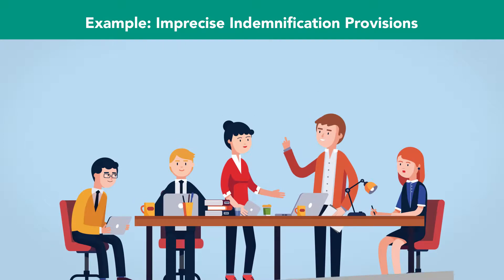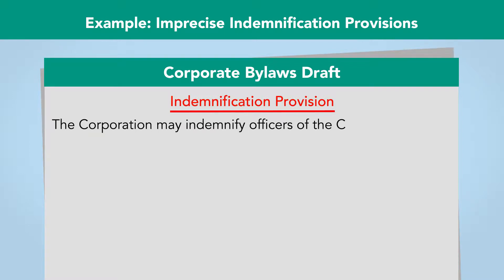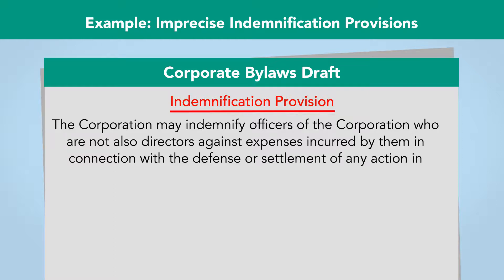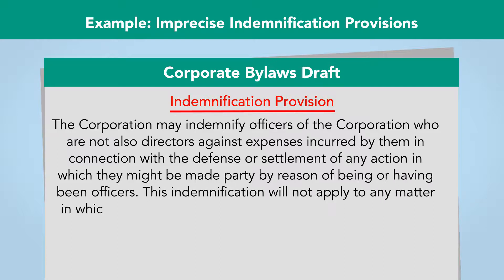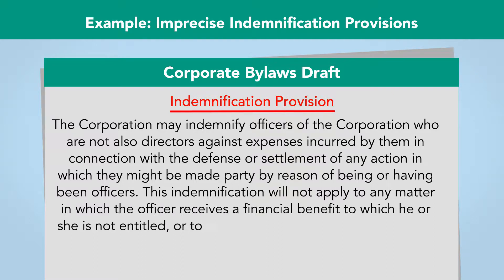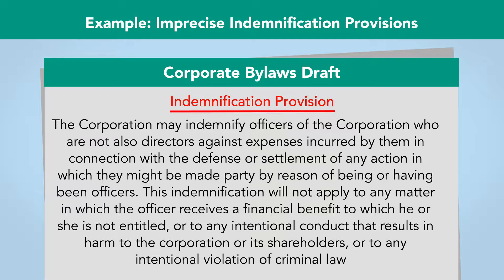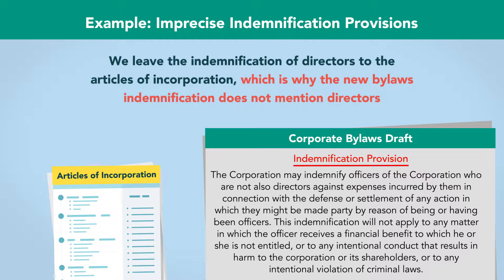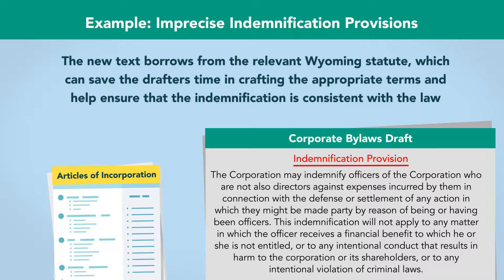With these statutory guidelines in mind, the bylaws drafters could modify the document's indemnification provision as follows: "The corporation may indemnify officers of the corporation who are not also directors against expenses incurred by them in connection with the defense or settlement of any action in which they might be made party by reason of being or having been officers. This indemnification will not apply to any manner in which the officer receives a financial benefit to which he or she is not entitled, or to any intentional conduct that results in harm to the corporation or its shareholders, or to any intentional violation of criminal laws." Note that we leave the indemnification of directors to the Articles of Incorporation. The new text borrows from the relevant Wyoming statute, which can save the drafters time and help ensure that the indemnification is consistent with the law.